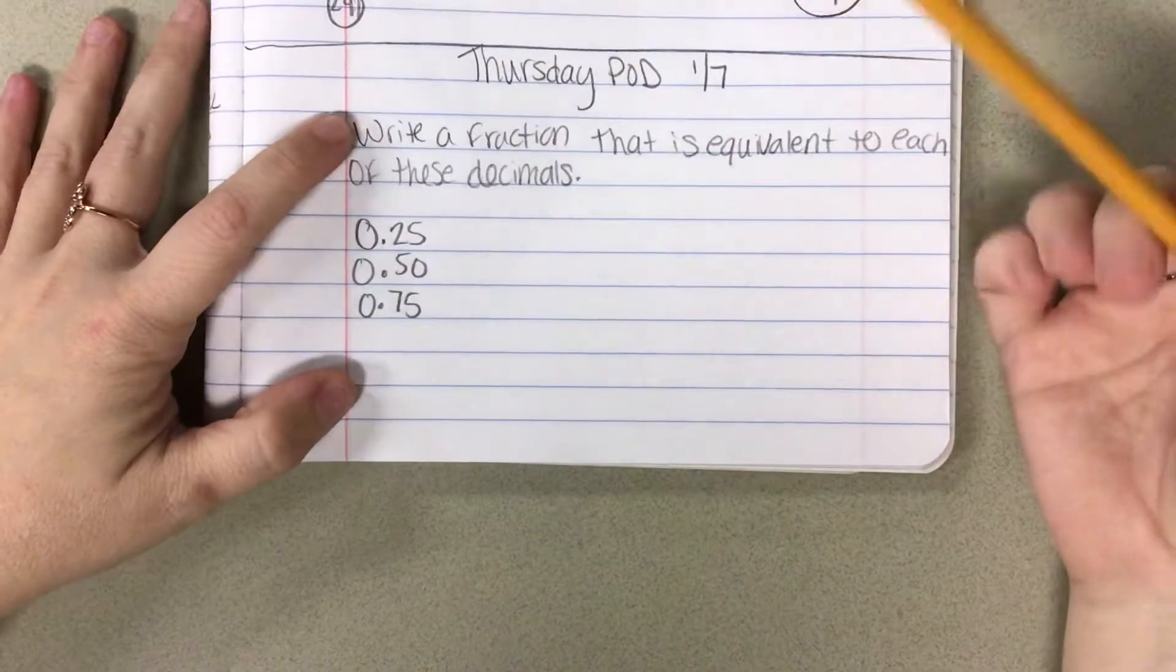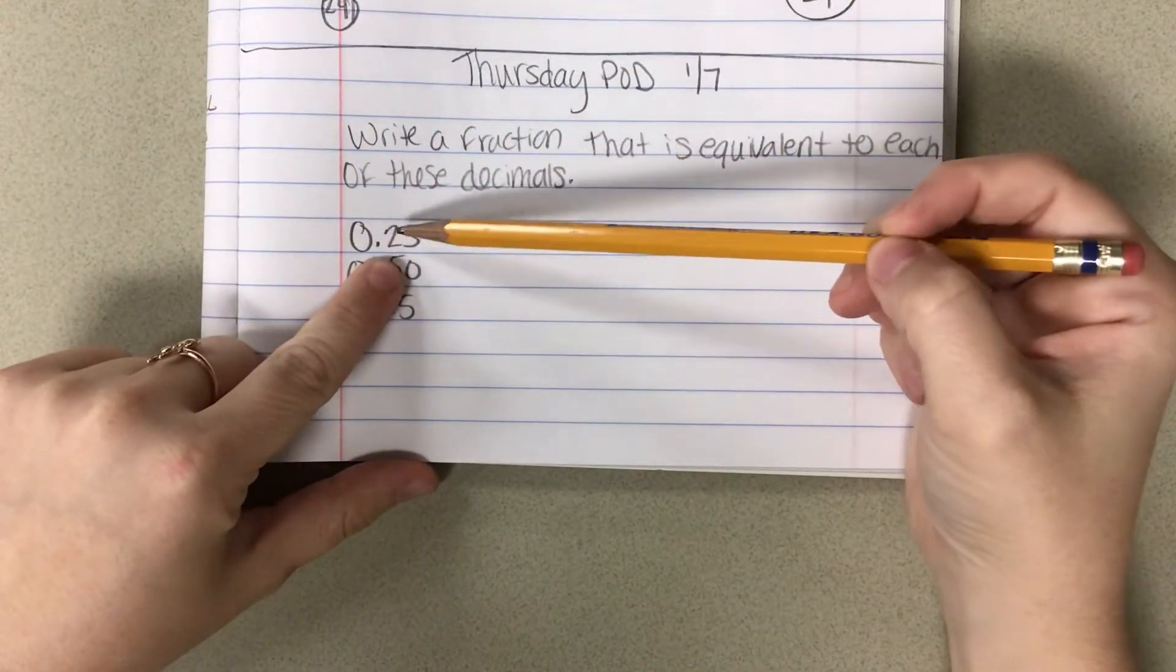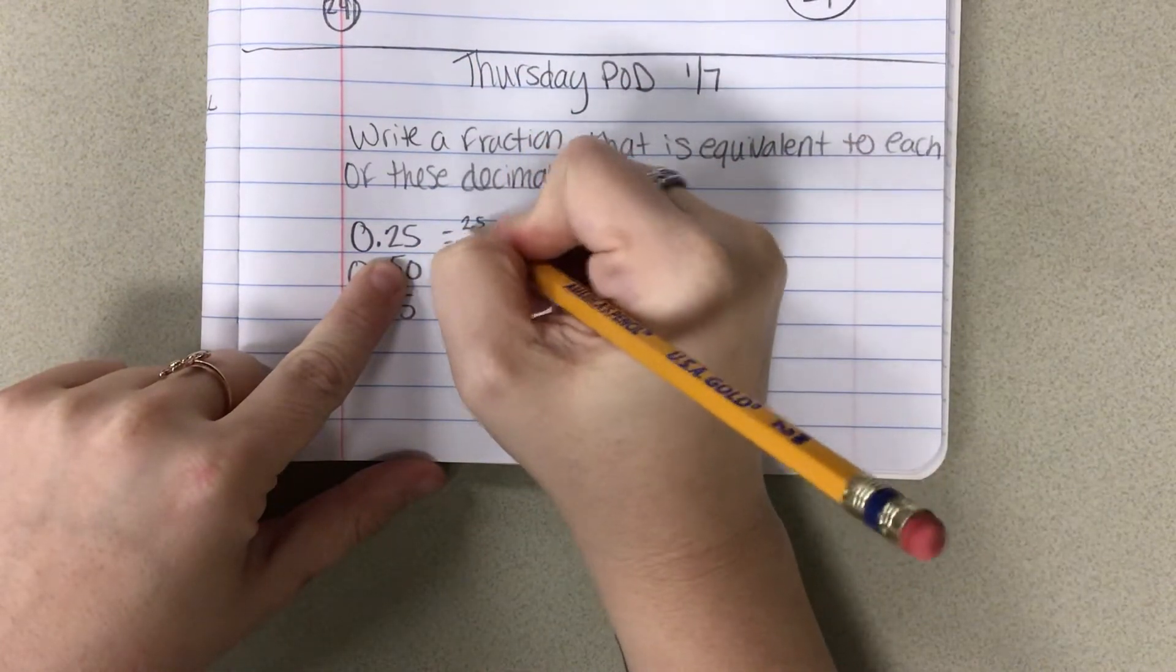The first way that I want to talk about is actually reading what they are. So this is 0 and 25 hundredths, so that is going to be the same as 25 hundredths.